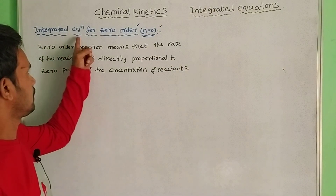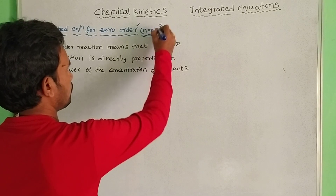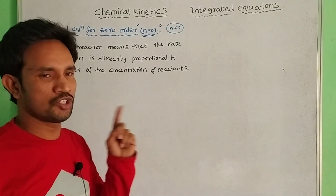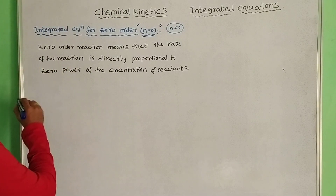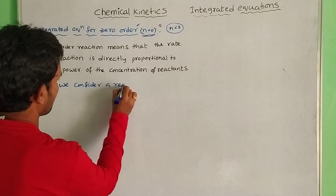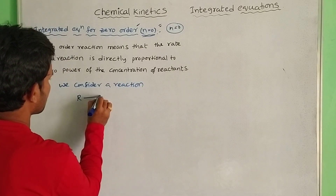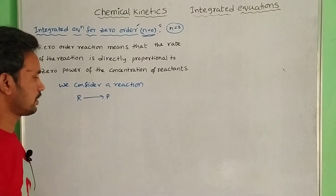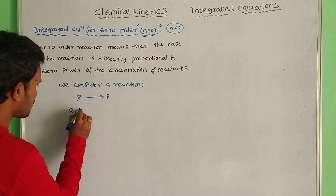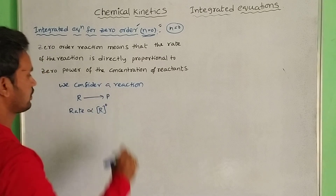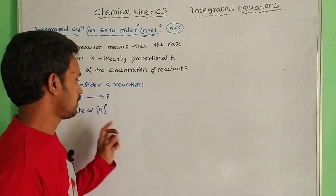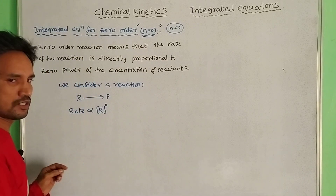First of all, the integrated equation for zero order. Zero order means the rate of reaction is raised to the power zero. We consider a reaction: R gives rise to P, where R is reactant and P is product. The rate is directly proportional to concentration of R to the power zero. Zero order means the power of the reactant is zero.